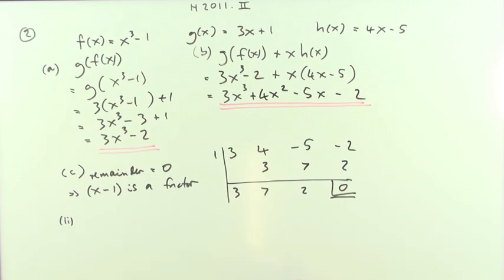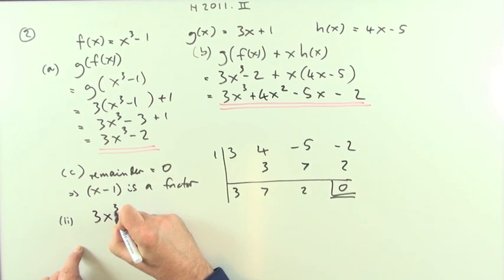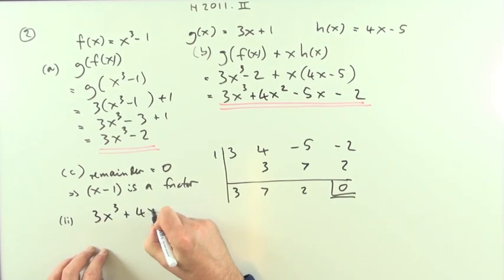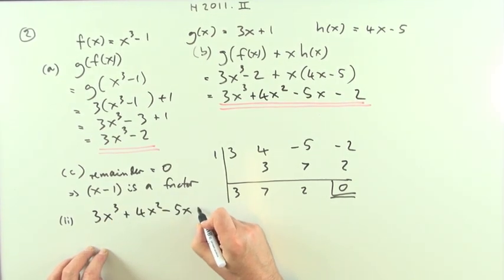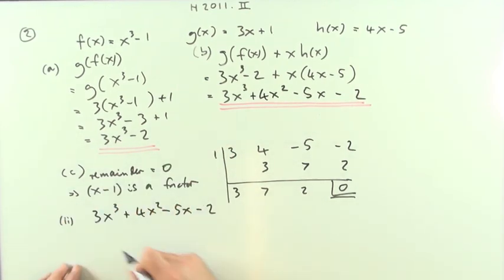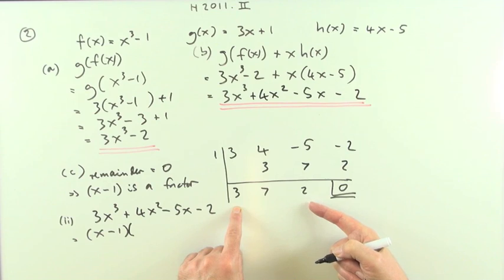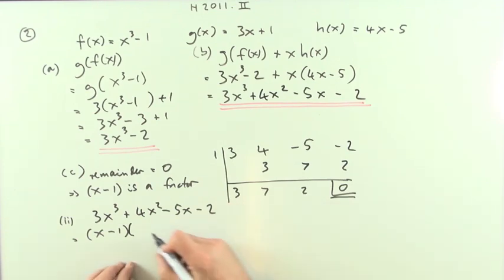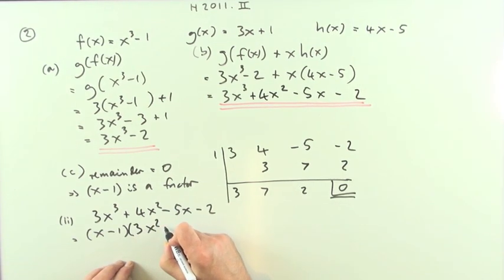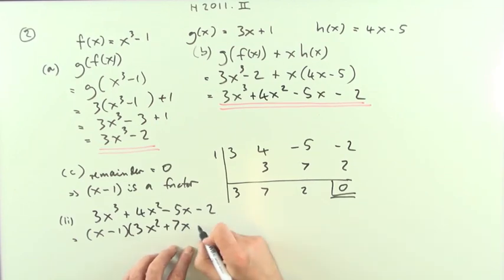Second part, factorize it completely. Well that means that I've got this, I think I'll set it what it was to begin with: 3x cubed plus 4x squared minus 5x minus 2. And x minus 1 turned out to be a factor because it divided in with no remainder. The number of times it divided in is this part: power 0, power 1, power 2, so it's 3x squared plus 7x plus 2.